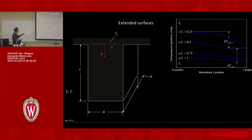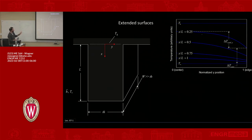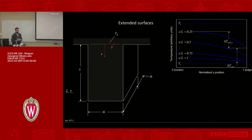The basic idea is you have something sticking off of a known temperature condition and you want to model the temperature profile as a function of x. As an extended surface, we want to get rid of the complication of modeling y — we just want the temperature distribution in x because it simplifies the math and is computationally more efficient. So we're going to make some approximations.